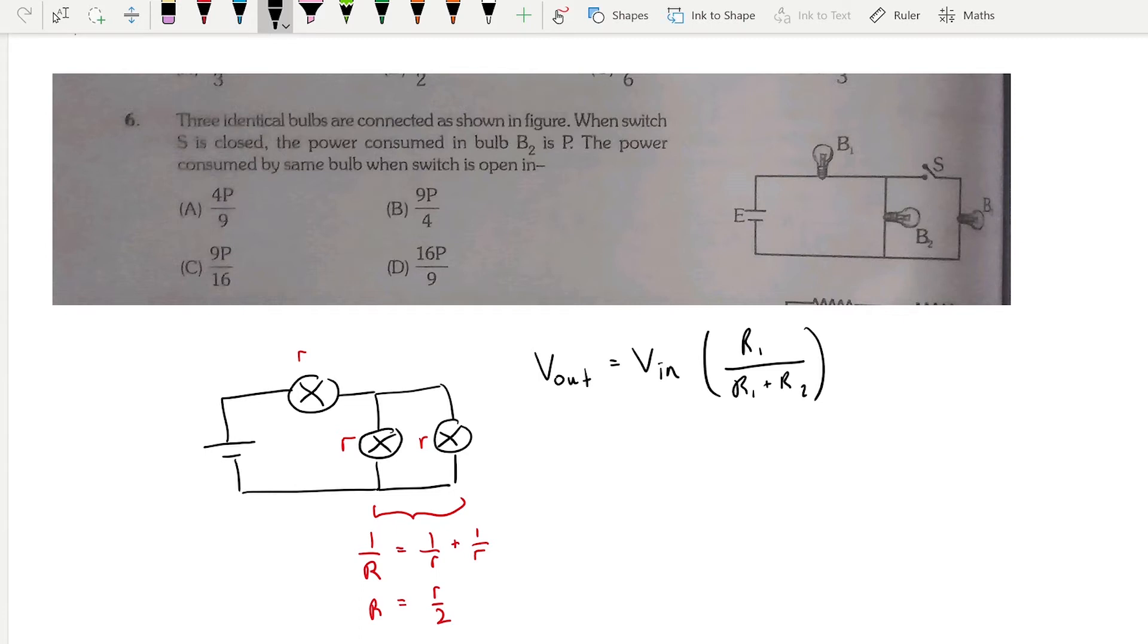That's equal to v times by r1, which is the resistance of the parallel circuit. That is r divided by 2. So all of this divided by r over 2 plus small r. So r2 in this case is just the resistance of this bulb here.